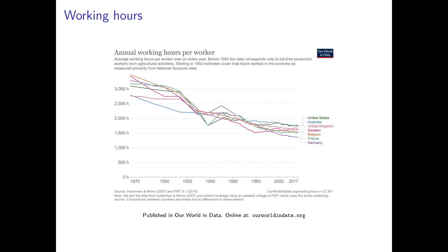We have also been able to increase the time we do not need to spend at work. This graph, again taken from Our World in Data, shows the annual average working hours per worker in different countries. In most of them, the average number of hours worked per year was around 3,000 in 1870, and it has decreased to about 1,500 to 1,800 — meaning it almost halved. So in terms of time spent working, we spend almost half as much time at work and therefore have more time available for other activities.